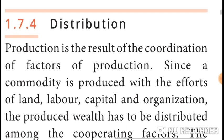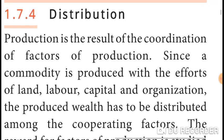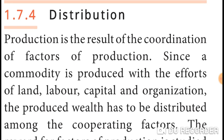The fourth division is distribution. Production is the result of the coordination of factors of production: land, labour, capital, and organization. Since a commodity is produced with the efforts of land, labour, capital, and organization, the produced wealth has to be distributed among the cooperating factors.